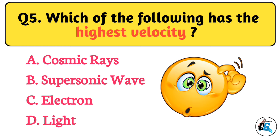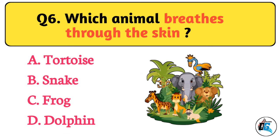Question No. 5. Which of the following has the highest velocity? The right answer is Option D: Light.